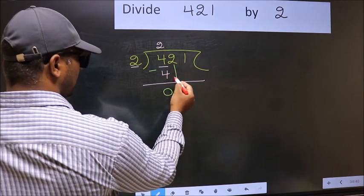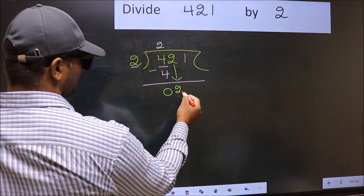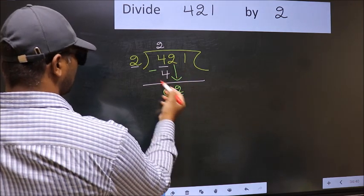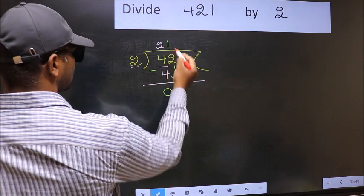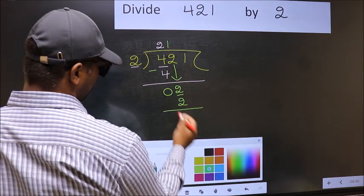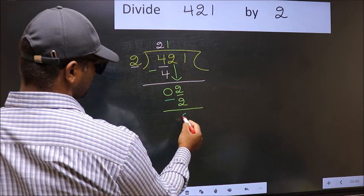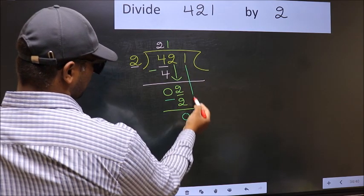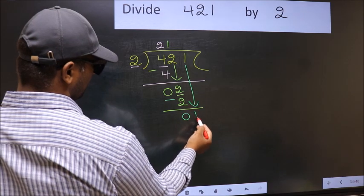Now you bring down the beside number. So 2 down. Now 2. When do we get 2 in 2 table? 2 times 1 is 2. Now you subtract. 2 minus 2 equals 0. Now you bring down the beside number. So 1 down.